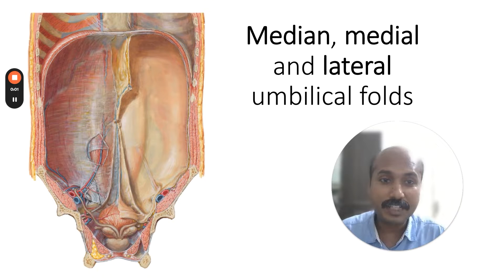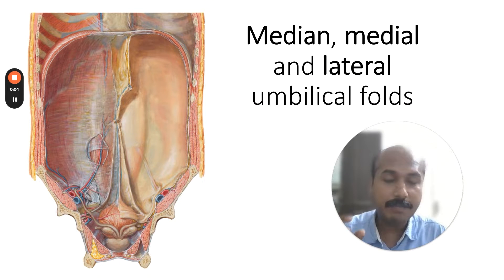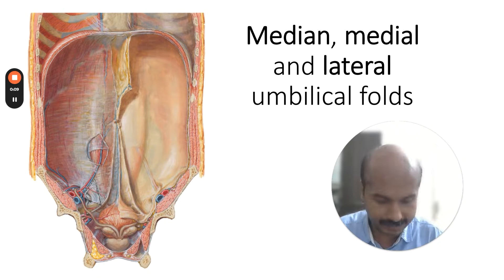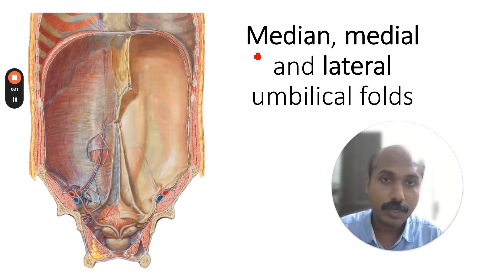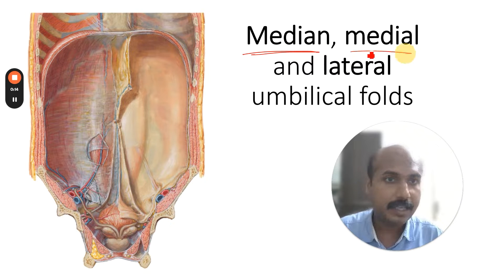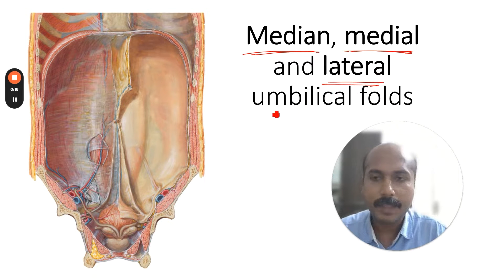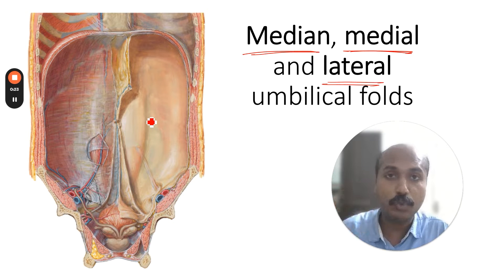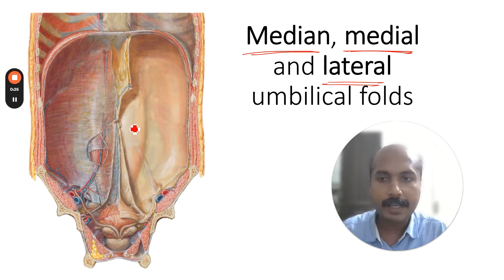Today we will learn about three important ligaments and folds seen in the posterior aspect of the anterior abdominal wall. These three are: the median umbilical ligament, the medial umbilical ligament, and the lateral umbilical fold. What you are seeing here is the posterior view of the anterior abdominal wall.